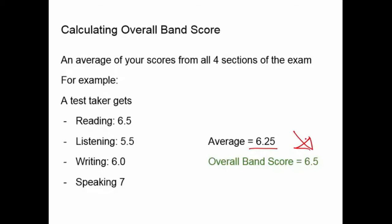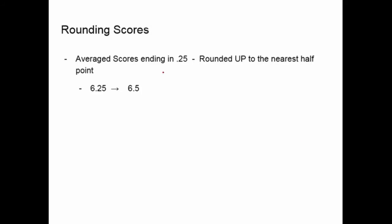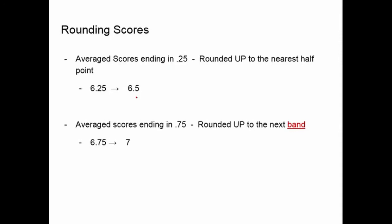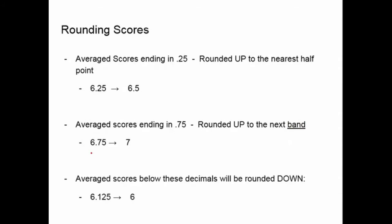How are overall scores rounded? If you average your four scores and the number ends in 0.25, it's going to round up to the next half-point. If your averaged score ends in 0.75, you're very lucky because your score goes up to the next band — a person who gets 6.75 will have their score rounded up to 7. Unfortunately, if your score ends in 0.125 or lower, it's going to round down, so a 6.125 average would end up being an overall band score of 6.